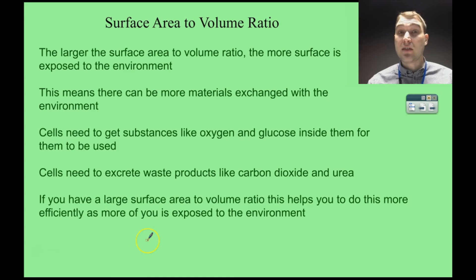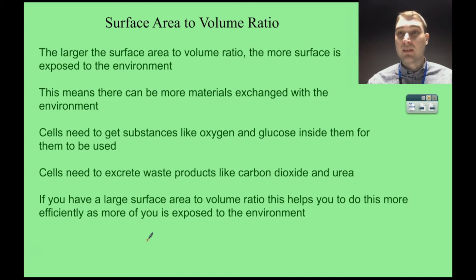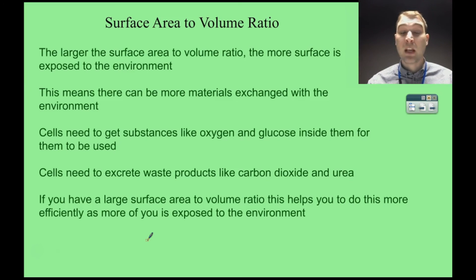A larger surface area to volume ratio makes it easier to exchange materials with the environment — getting more oxygen and glucose in, and more carbon dioxide and other waste out. By having many small cells, you can exchange more materials with the environment more readily. Today on Flipping Science, we looked at the cell membrane, how it's selective, what its structure is, and the surface area to volume ratio of cells. That's it — see ya!